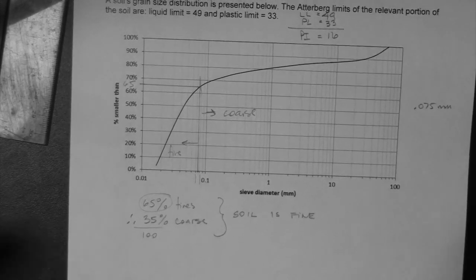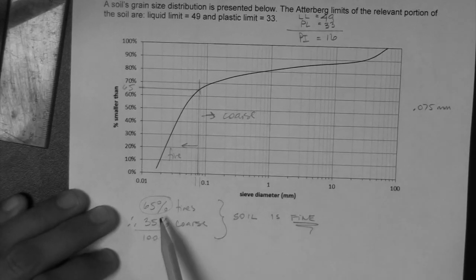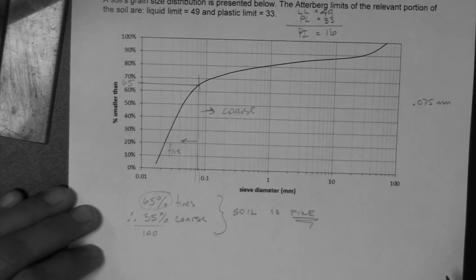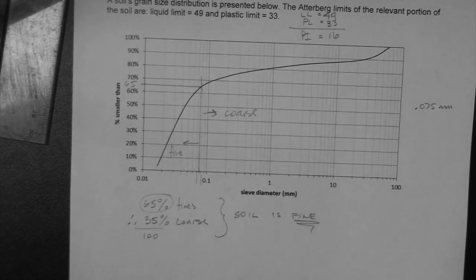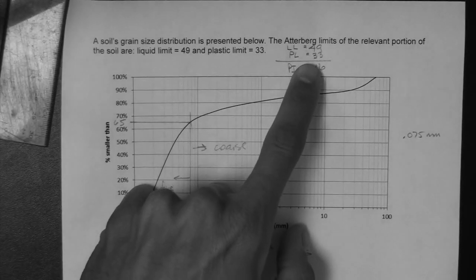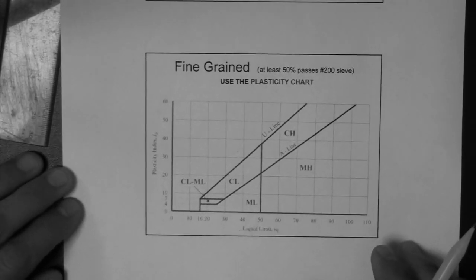So, what do we do if the soil is fine? If the soil is fine, because more than 50% of the soil is composed of fines, then what we do is we simply utilize our liquid limit and plasticity index and map those numbers on the plasticity chart.